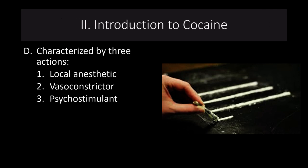Cocaine's effects are characterized by three actions. First, it is a local anesthetic — its clinical use is to numb the mucosal membranes in the nose for sinus surgery, and users often report their face and gums feeling numb. Second, it is a vasoconstrictor — it shrinks blood vessels, which actually makes subsequent nasal use more difficult as the sinus passages constrict. Third, it is a psychostimulant, which is why most people use it.